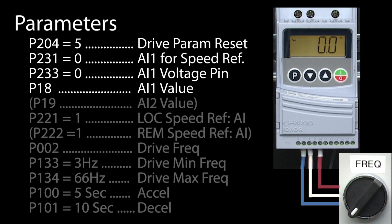Now, if you used analog input 2, then you would use parameter 19 to view the potentiometer value. Great. We now know we wired things up correctly and that the drive sees the potentiometer on analog input 1.